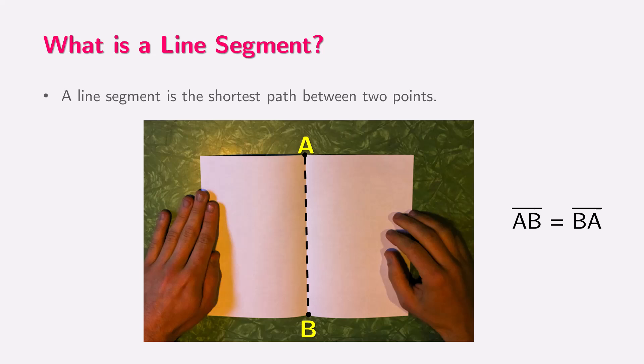A line segment is the shortest path connecting two points. It has two endpoints. Think of a crease on a folded paper. That's a great example of a line segment. If we connect points A and B with a line, we call it segment AB, or BA. We can represent the line segment as AB or BA. It is denoted with a line at the top of the capital letters AB or BA.